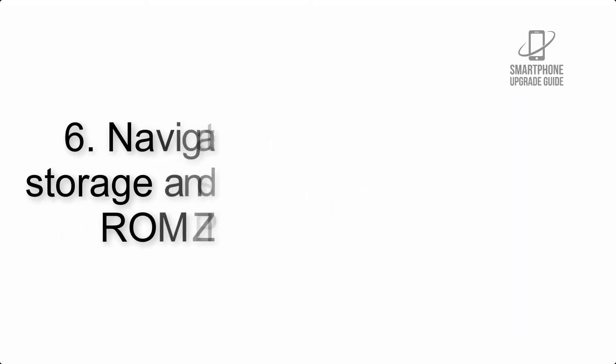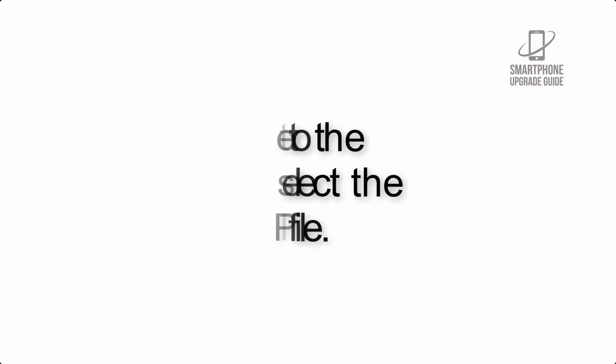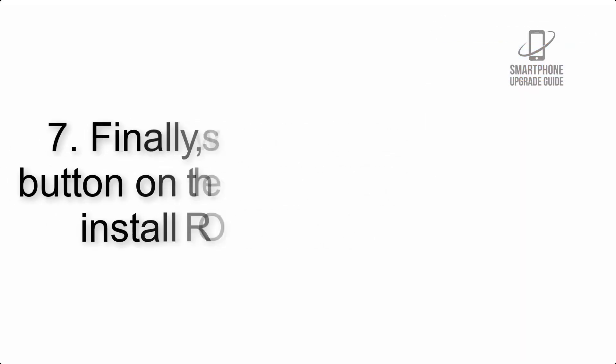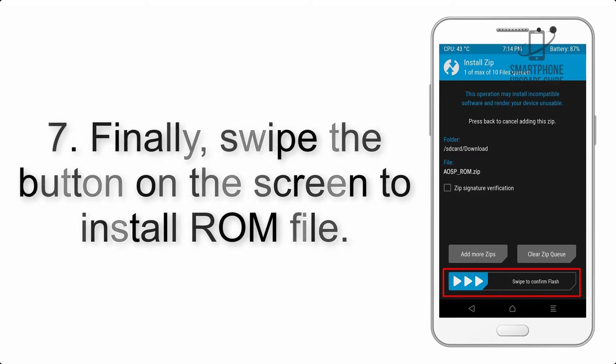Step 5: Go back to the recovery main screen and tap on the Install button. Step 6: Navigate to the storage and select the ROM zip file. Step 7: Finally, swipe the button on the screen to install the ROM file.